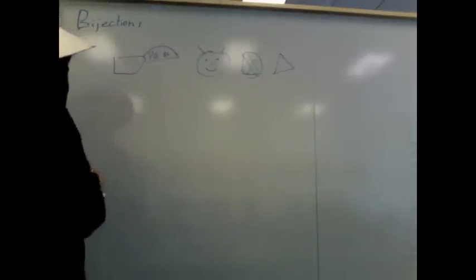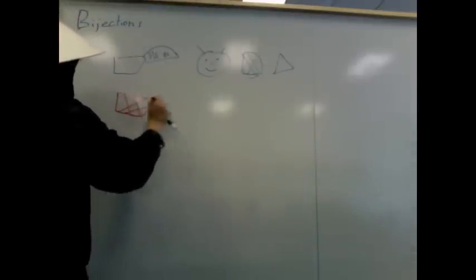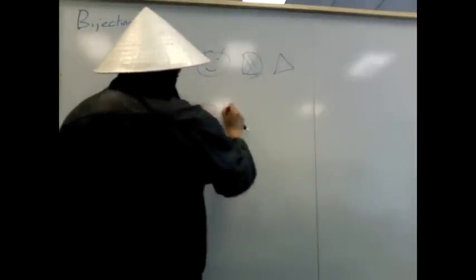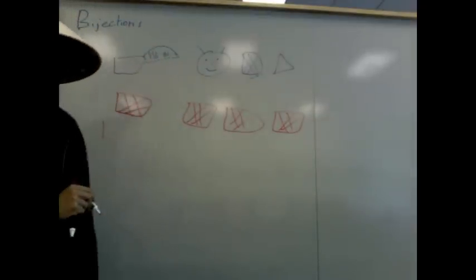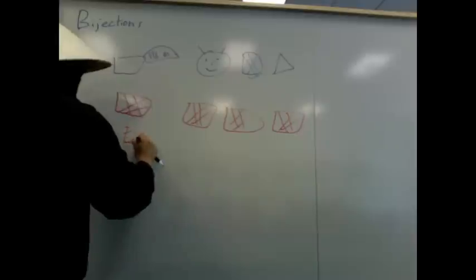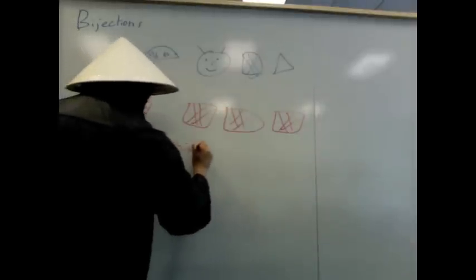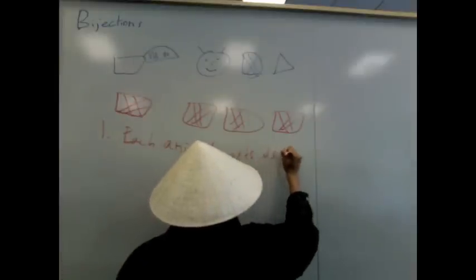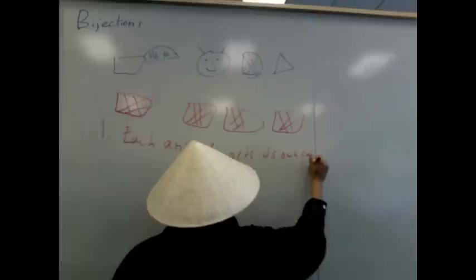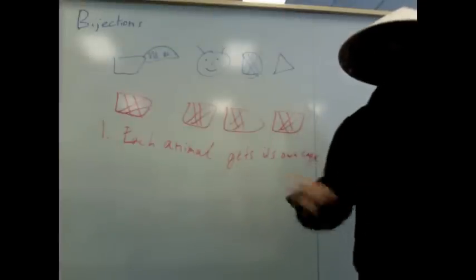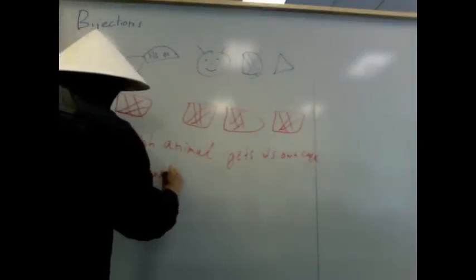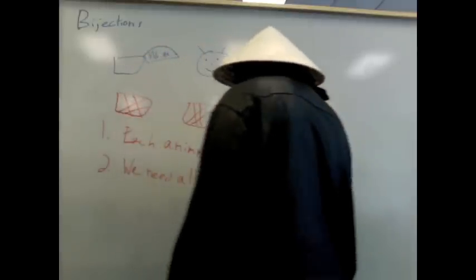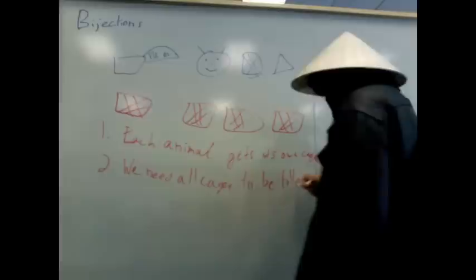So for four animals, we need four cages. We have two rules in the game. These are cages. The first rule is we need each animal gets its own cage. The reason why is because if two animals, same cage, they eat each other. And the second thing we need, we need all cages to be filled.